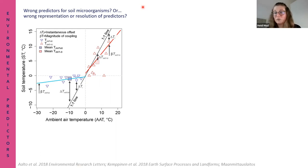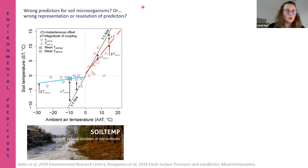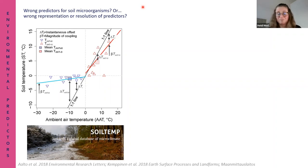Most likely it's not the air temperature that affects soil microorganisms, but the soil temperature. The next problem is where to get soil temperature data. That kind of data didn't exist back then, but now Jonas Lembrecht has studied this - a project on soil temperature data - and we are moving toward a global database of microclimate, which will likely help in choosing the right temperature predictors for soil microorganisms.